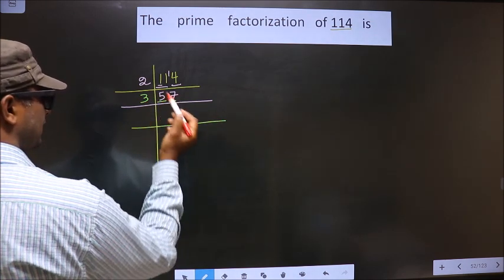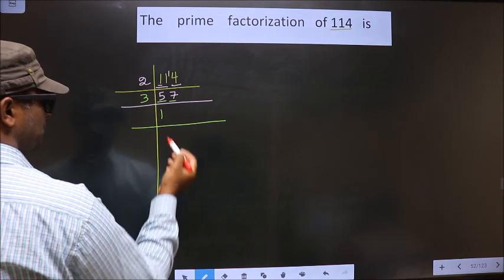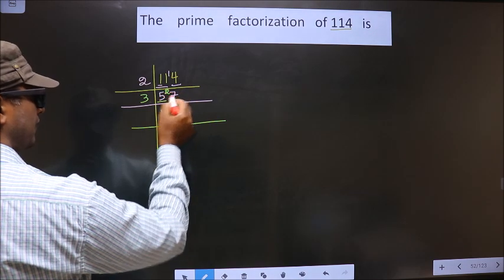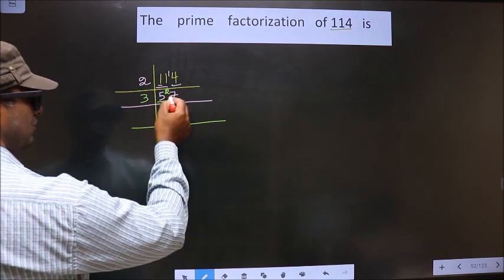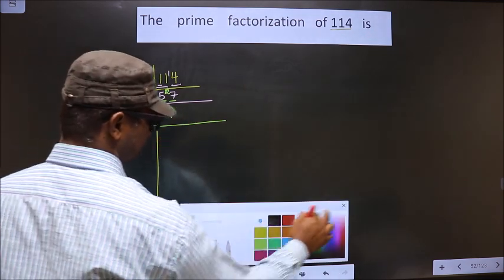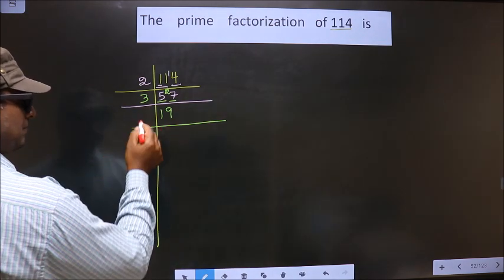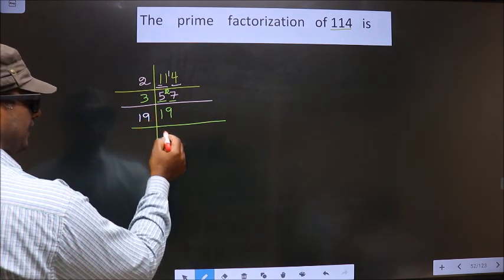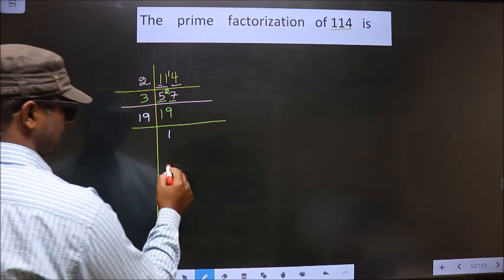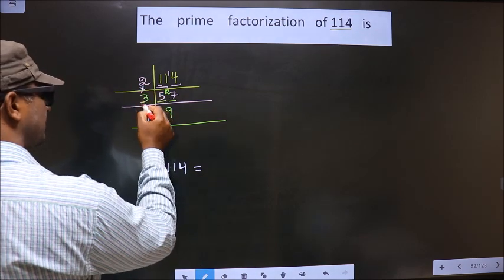When do you get 27 in the 3 table? 3 times 9 is 27. Now 19 is a prime number, so we take 19 and 1 here. So the prime factorization of 114 is, you put into symbol between them, that is 2 into 3 into 19.